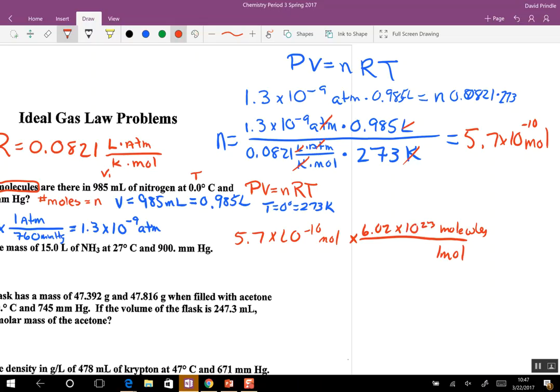Rather than try to do all this in your calculator, you can take the 5.7 times the 6.02, and we did this yesterday. You get 34.314, and then minus 10 plus 23 is 13. Then you fix it, and it's 3.14 times 10 to the 14th molecules.